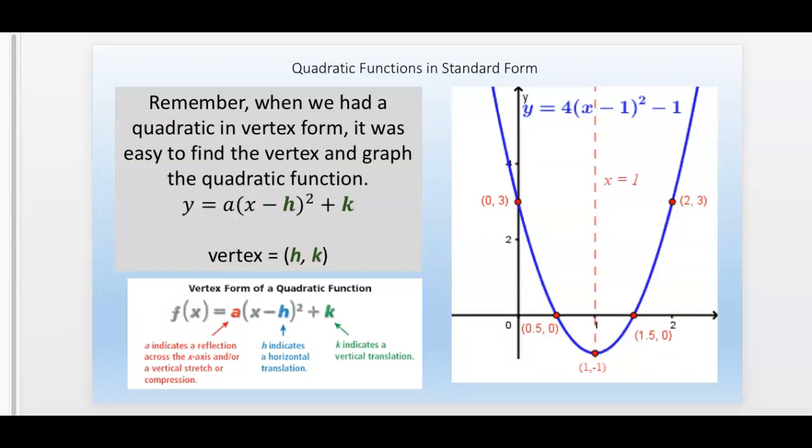Remember when we had a quadratic in vertex form, it was easy to find the vertex because h, k is listed here for you. If you notice in vertex form it says x minus h, and that's why when we would read that, it was always the opposite.